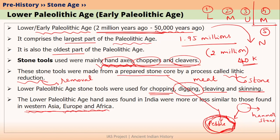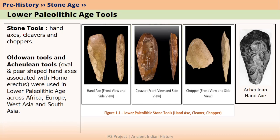Let's look at the stone tools used by Lower Paleolithic people in a bit more detail. The stone tools used were: one, hand axes; two, cleavers; and three, choppers. These were the main stone tools used by Lower Paleolithic people. You can see the images here — this is a hand axe, this is a cleaver, and this is a chopper.